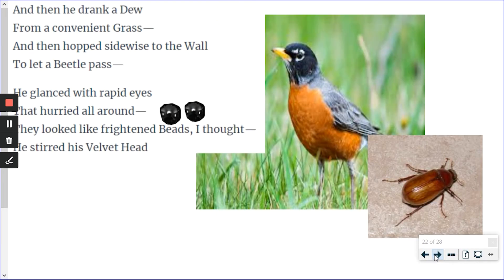And then he drank a dew from a convenient grass. As you can tell, dew is water. He took a drink of water and then he hopped sidewise to the wall to let a beetle pass. Instead of flying, this kind of bird is a robin and robins often hop on the ground. I'm sure that you've seen them. And here is a picture of a beetle. Of course, it's not quite this big and it's not a cockroach. This is a beetle from outside. That's all he's talking about.